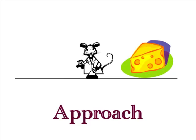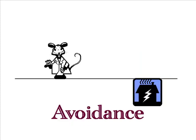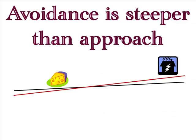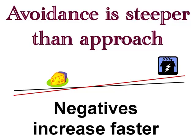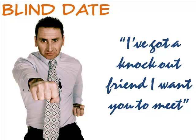We also dread visiting relatives, attending meetings, and going to the dentist. The closer we get to negative events, the worse they look — that's our built-in avoidance gradient. One of Dollard and Miller's key principles is that avoidance gradients are steeper than approach gradients. Blind dates don't sound too bad from a distance, but the closer we get to the day of the event, the worse it seems.